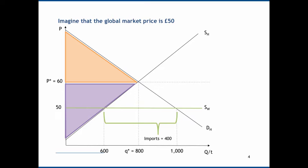Now that the price has fallen and quantity demanded has risen, there's an increase in consumer surplus. But because quantity supplied domestically has fallen, there's a reduction in producer surplus. Consumers are better off because they can buy more at a cheaper price, but domestic producers are worse off because they face competition from cheaper imports.